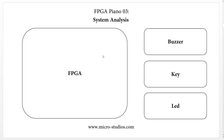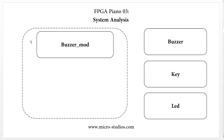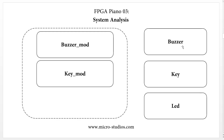Inside the FPGA we will have three modules to match each component on our board. The first is the buzzer module to control our buzzer component. Next we will have the key module to control and receive our key signal. And next we will have the LED module to control the LED turning on or off.